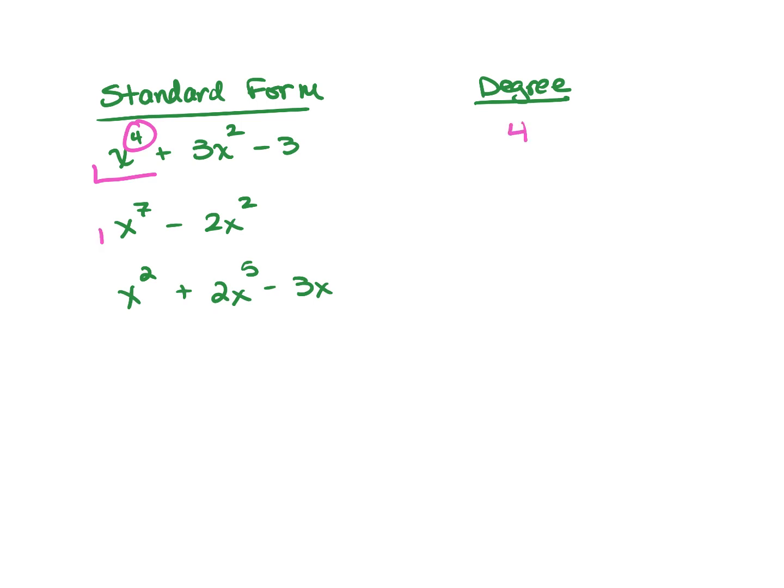In this problem, the leading is 7 because it's the highest power of x. And the third one, the leading term is actually in the middle, and so the degree is going to be 5 because the highest power of x is 5.